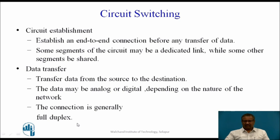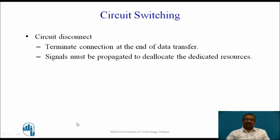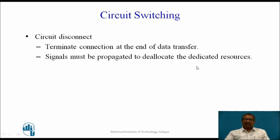The connection between the two stations communicating with each other through this communication network is generally a full duplex one. The last phase of circuit switching is circuit disconnect. This is necessary so that the link used for transferring data is released for new connections. This terminates the connection at the end of the data transfer, and signals must be propagated to deallocate all resources dedicated for this connection.